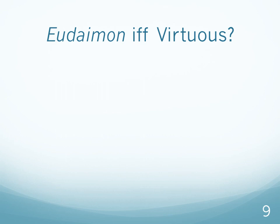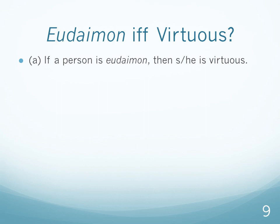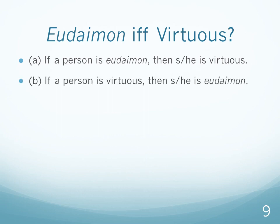Consider this bi-conditional. IFF — shorthand for 'if and only if' — means the logic goes both ways. The statement claims: if you are eudaimon (roughly, profoundly happy), then you are virtuous; and also, if you're virtuous, then you're happy. Consider those two separate conditional directions: if you're happy, then you're virtuous; and if you're virtuous, then you're happy.